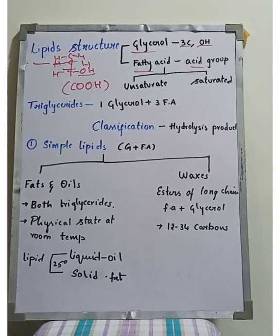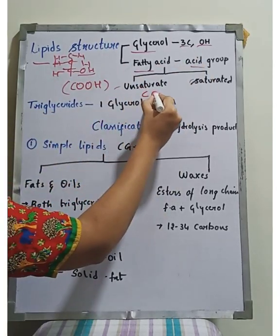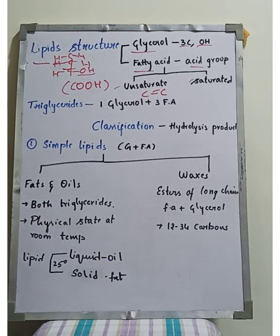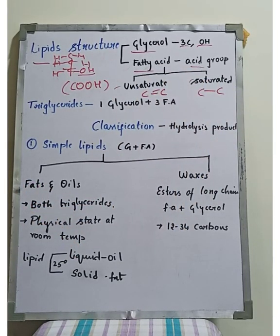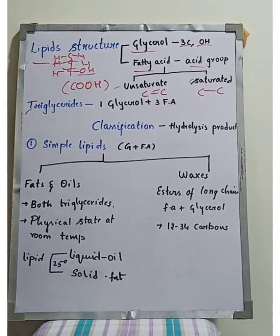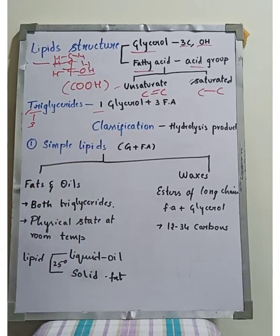Fatty acids are of two types: unsaturated fatty acids and saturated fatty acids. A C=C double bond indicates unsaturated fatty acids, while a C-C single bond indicates saturated fatty acids. Triglycerides are one form of lipids. Triglycerides have 3 fatty acid molecules attached to a glycerol molecule, and this is the lipid structure of triglycerides.